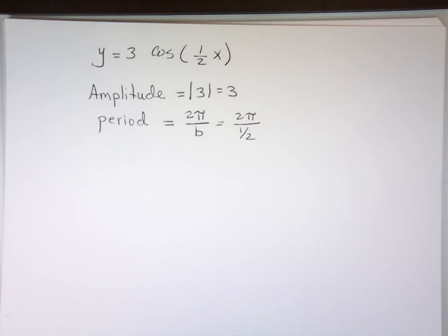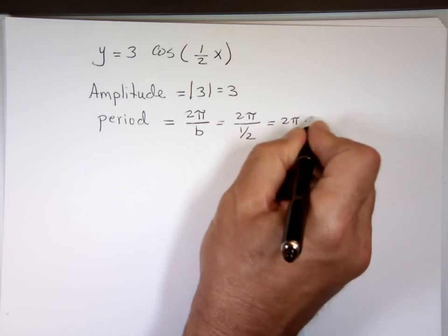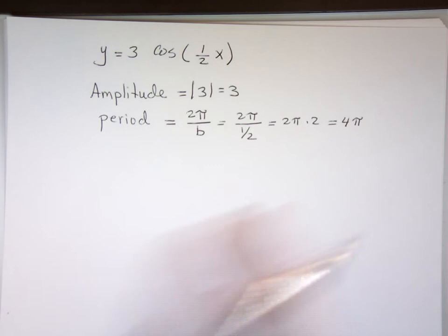When you divide by a half, the same as multiplying by 2. That is 4 pi. It's going to take 4 pi to see one cosine function.